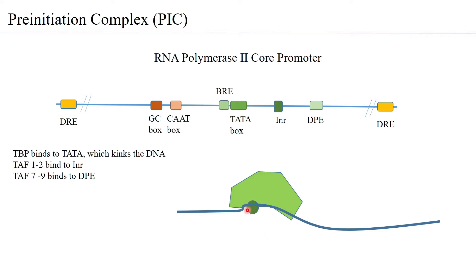Just upstream of the TATA box is present the BRE. In many cases, BRE is present both upstream and downstream of the TATA box — referred to as BRE-U (upstream) and BRE-D (downstream).